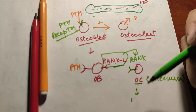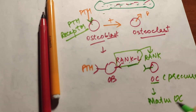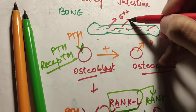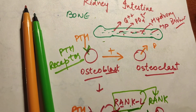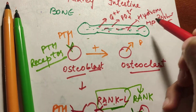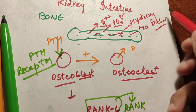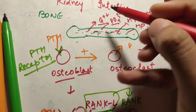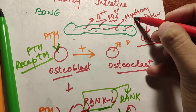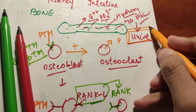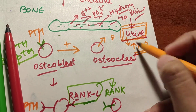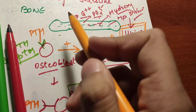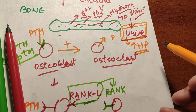Once the osteoclast becomes mature, bone resorption occurs. The mature osteoclast removes calcium, phosphates, and hydroxyproline from the bone. Hydroxyproline goes to the urine, while calcium and phosphate remain in the blood. If hydroxyproline level is high in the urine, it indicates bone destruction is occurring — hydroxyproline is a remarkable marker for bone destruction.